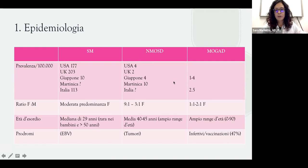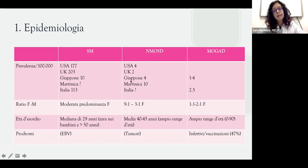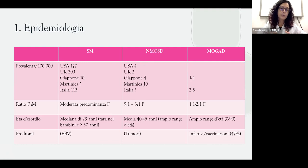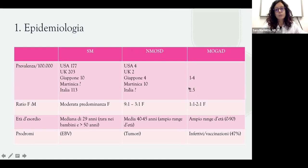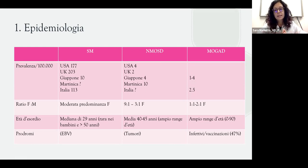La prevalenza della neuromielite ottica e di MOGAD è molto più bassa. La neuromielite ottica tende ad essere maggiore all'est e a Martinica, che ha la prevalenza più alta nel mondo. Non sappiamo bene quale sia la prevalenza di NMOSD in Italia. Per MOGAD la prevalenza è abbastanza uguale nel mondo, circa 1.4-2 su 100.000, e in Italia è di 2.5, un dato del nostro studio, completamente in range con i tassi globali.